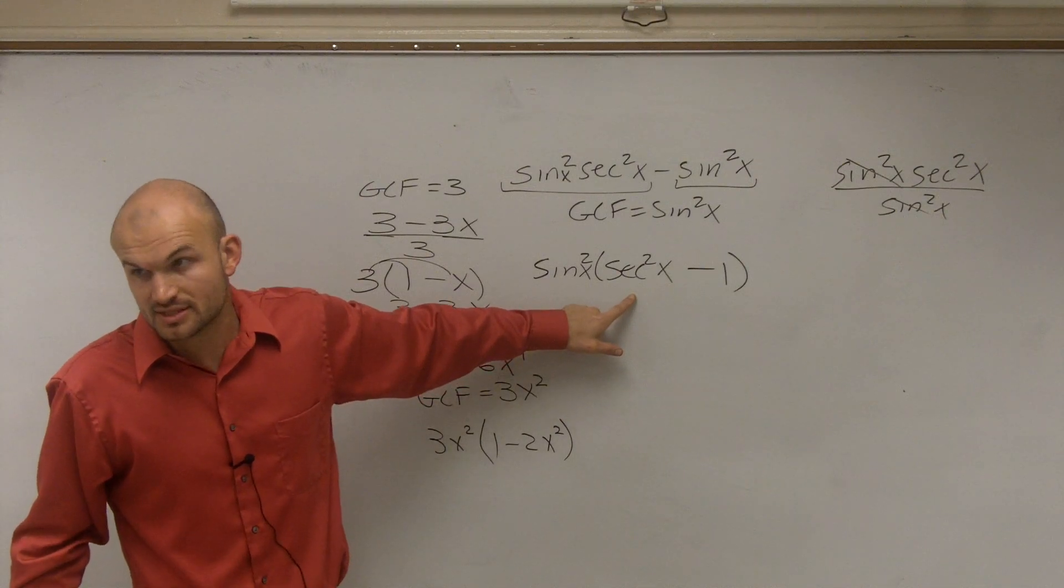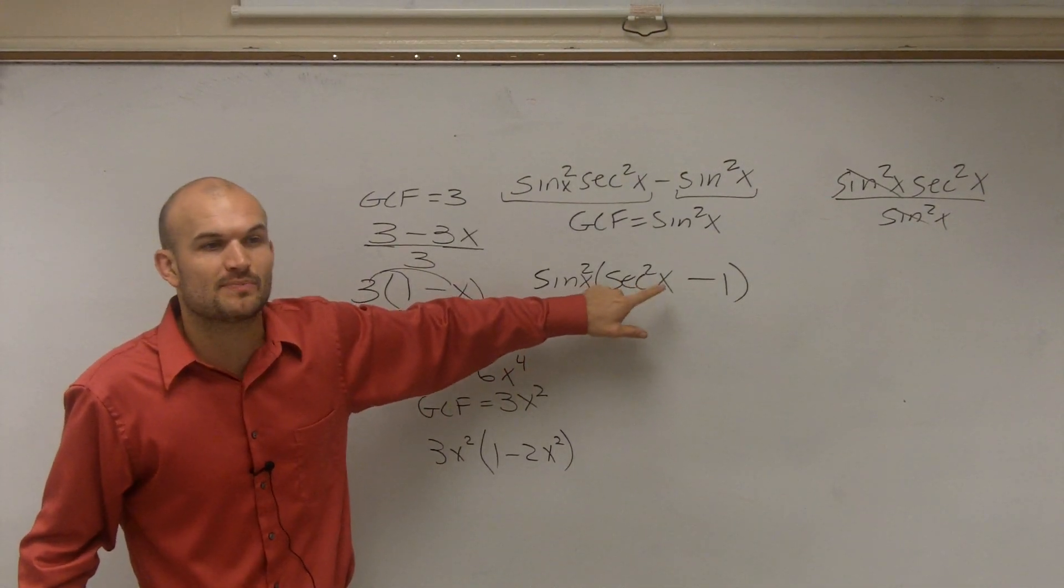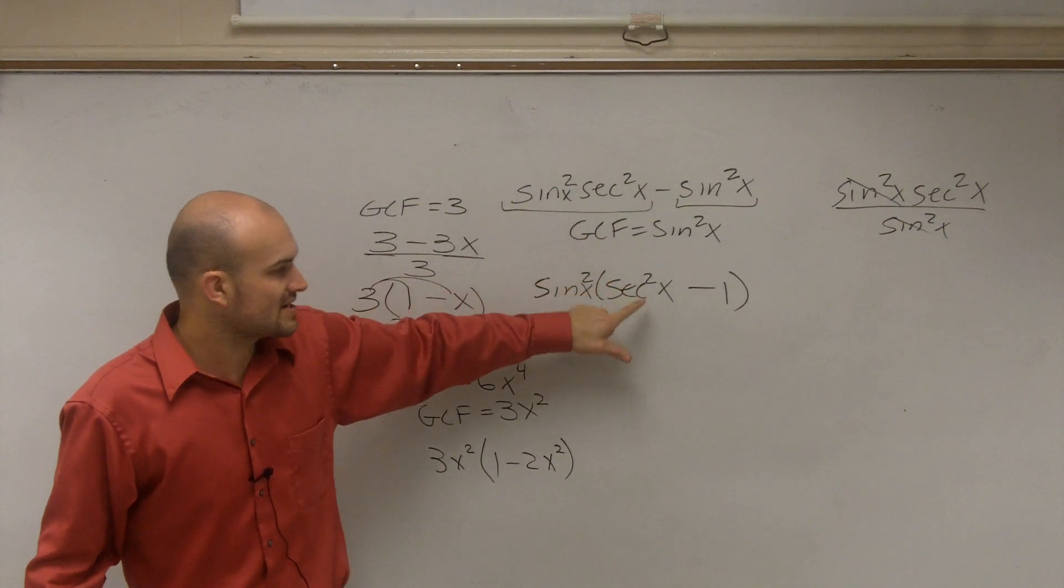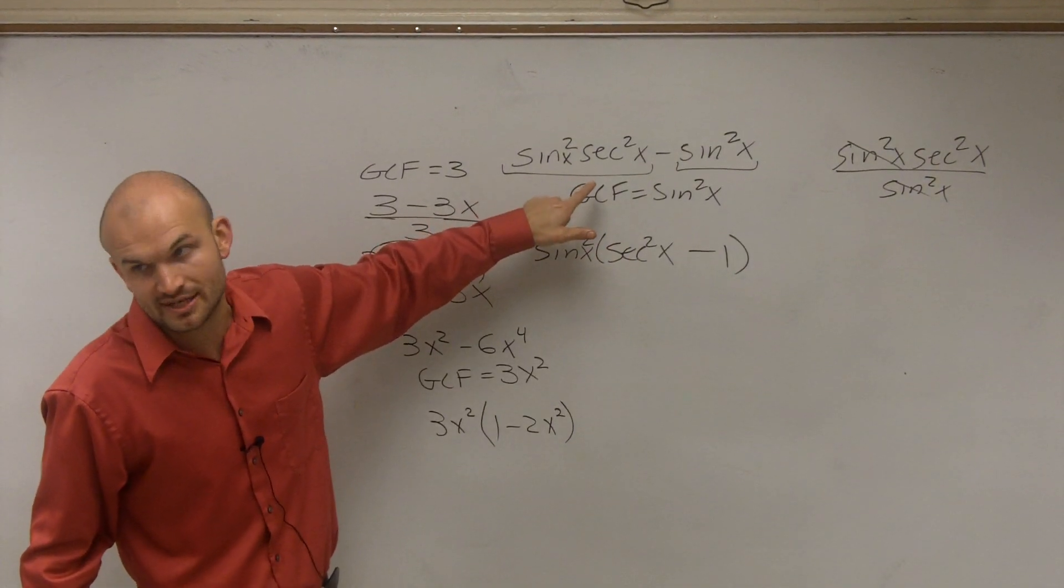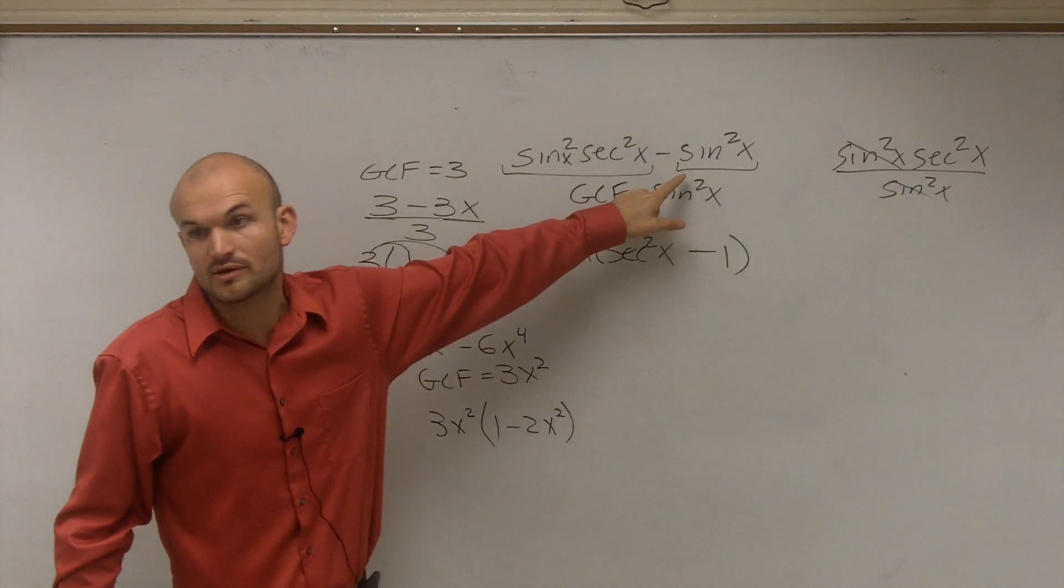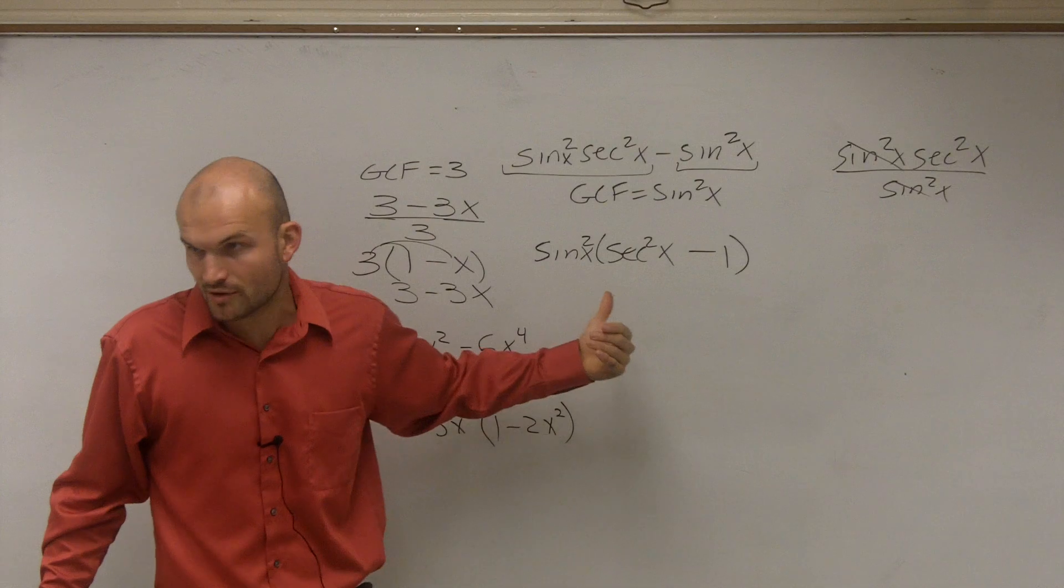So now I have factored this to this format. You want to check your answers? Let's see if it makes sense. Does sine squared of x times secant squared of x give you sine squared of x secant squared of x? Yes. Does sine squared of x times negative 1 give you negative sine squared of x? Yes. So we factored it correctly.